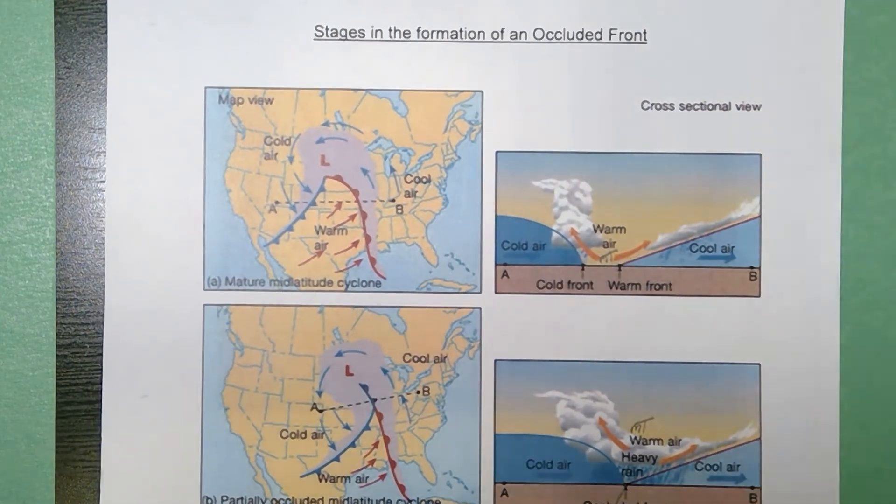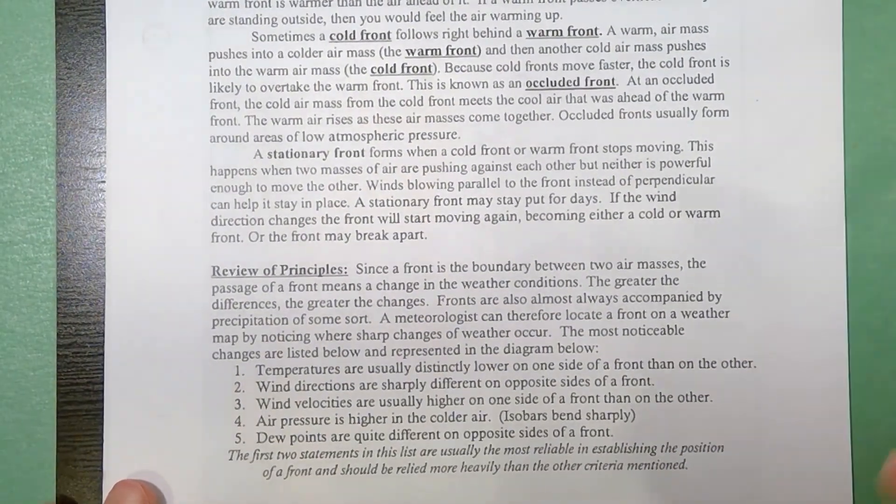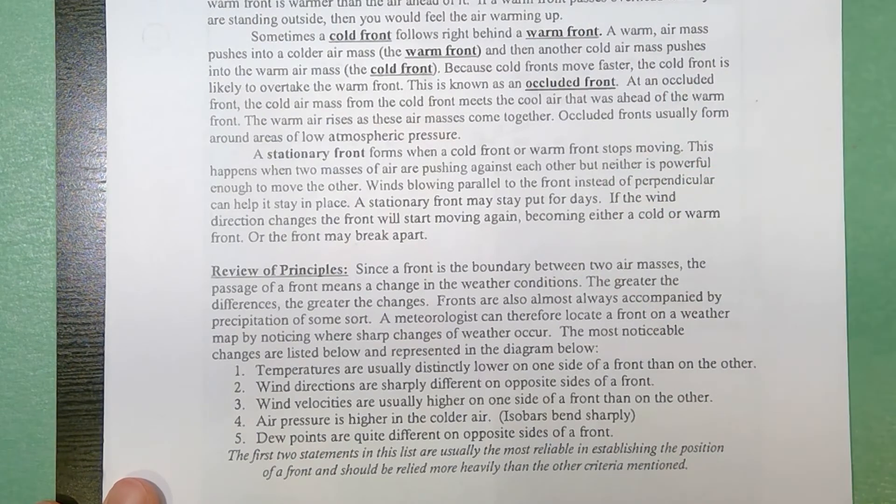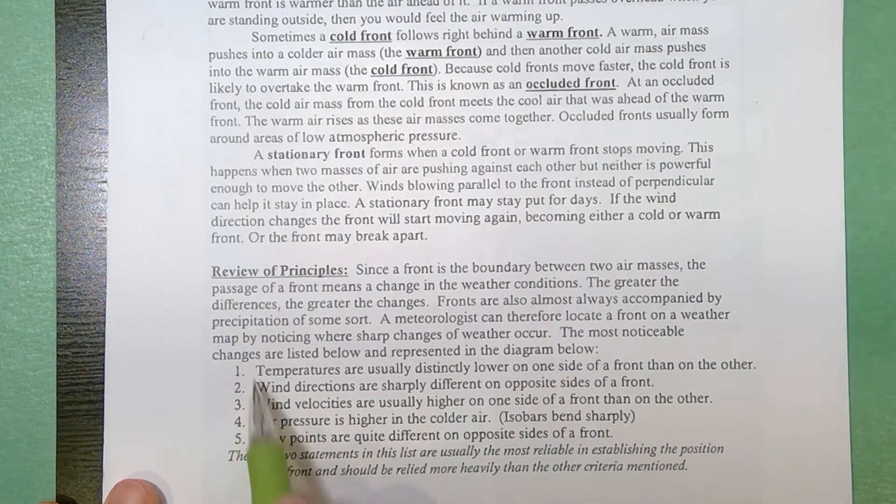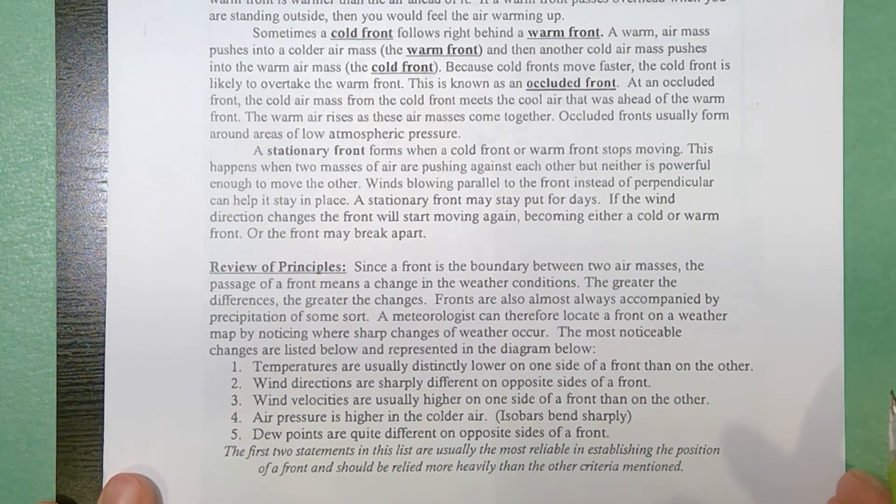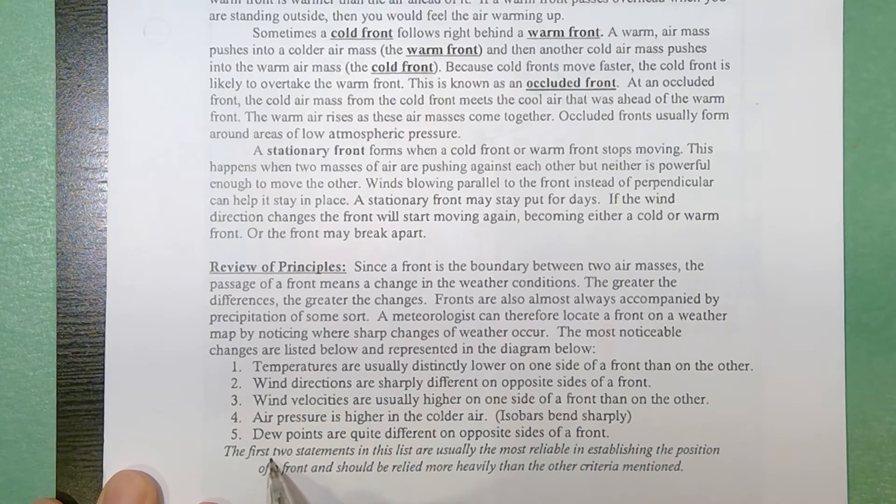Enough about fronts. Let's take a look at the activity. On the bottom make sure you read the entire top that goes over warm fronts cold fronts but let's look at the principles that we're going to use for this. So if I'm trying to find a front on a weather map I'm going to look at the station models. You can typically notice where fronts are based on these five changes and it tells you the first two are the most important statements.